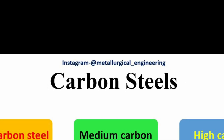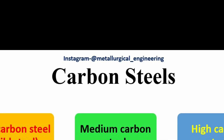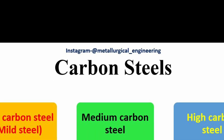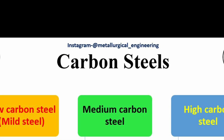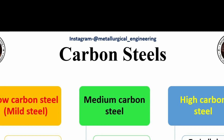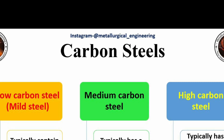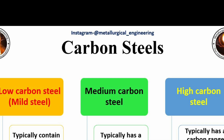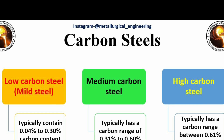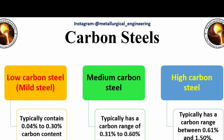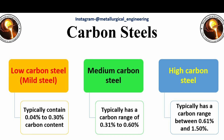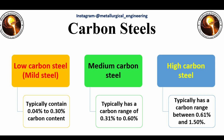First is carbon steel. Carbon steels contain trace amounts of alloying elements and account for 90% of total steel production. Carbon steels can be further categorized into three groups depending on their carbon content: 1. Low carbon steels (mild steels) contain up to 0.3% carbon; 2. Medium carbon steels contain 0.31–0.6% carbon; 3. High carbon steels contain more than 0.61–1.50% carbon.